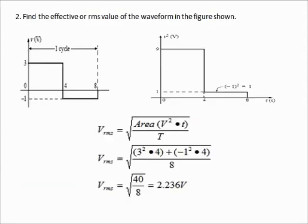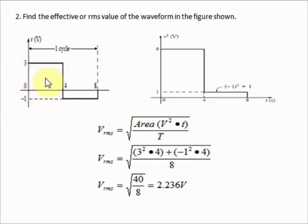Problem number 2: Find the effective or RMS value of the waveform shown. The figure given is a square wave. To solve this, use the area-based formula: VRMS = √(area / period). For the square wave, use V² × time for each section. The first section has a voltage of 3 V and a duration of 4 seconds, so 3² × 4.